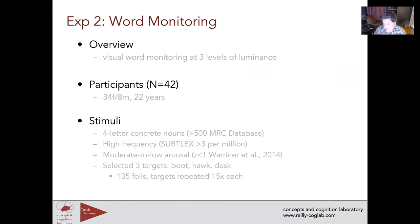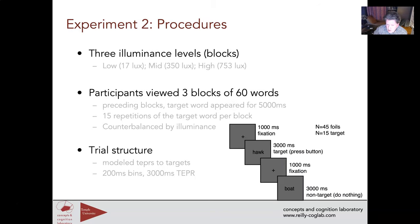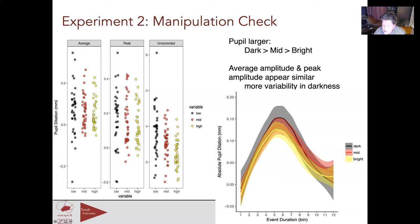In a follow-up experiment with 42 participants, we used a word monitoring task where people viewed streams of words and pressed a button for target words like 'boot,' 'hawk,' and 'desk,' tested in very dark, medium, and very bright light. The results were the same: regardless of whether the baseline pupil started at five millimeters or 2.3 millimeters, participants showed the same raw absolute amplitude change, confirming that the task-evoked pupil response is linear and not nonlinear.